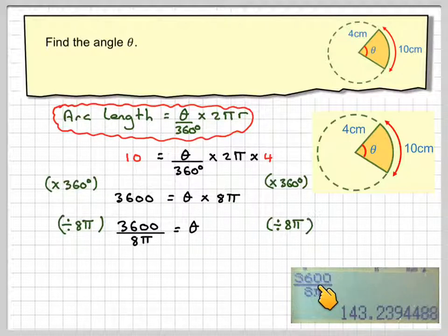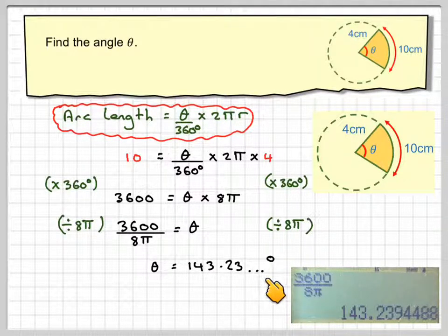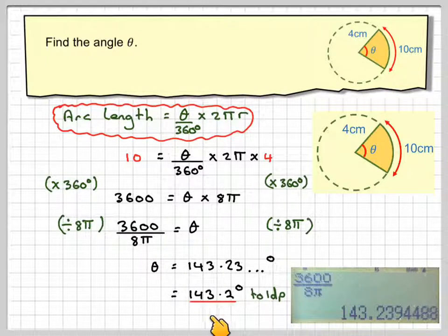So just write here, it's 3600, fraction 8 pi, it's going to give me 143.23 degrees. Okay, and normally angles are given to 1 decimal place, so it's 143.2 degrees to 1 decimal place.